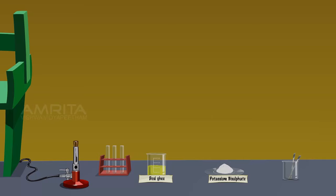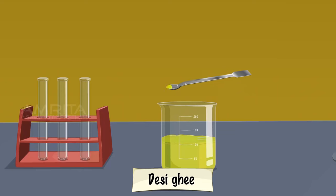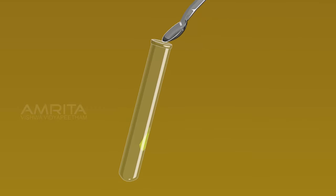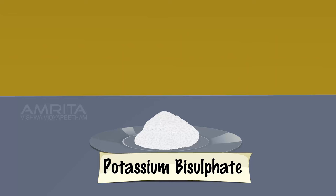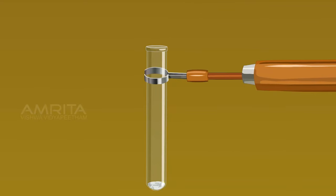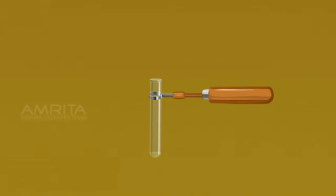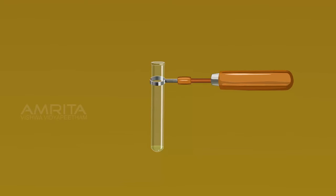Acrolein Test. We require desi ghee, potassium bisulphate crystals, test tube, spatula, and Bunsen burner. Using a spatula, take a small amount of desi ghee in a test tube. Using another spatula, take a small quantity of potassium bisulphate crystals and add them into the test tube. Hold the test tube with the test tube holder and heat it over the Bunsen burner. When fat is heated strongly in the presence of a dehydrating agent like potassium bisulphate, the glycerol portion of the molecule is dehydrated to form an unsaturated aldehyde called acrolein, which has a pungent irritating odour.